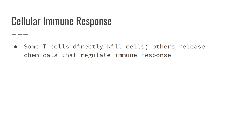The cellular immune response is more varied than the humoral. We're going to have different kinds of effector T cells — some that directly kill other cells and others that release chemicals to control the immune response.